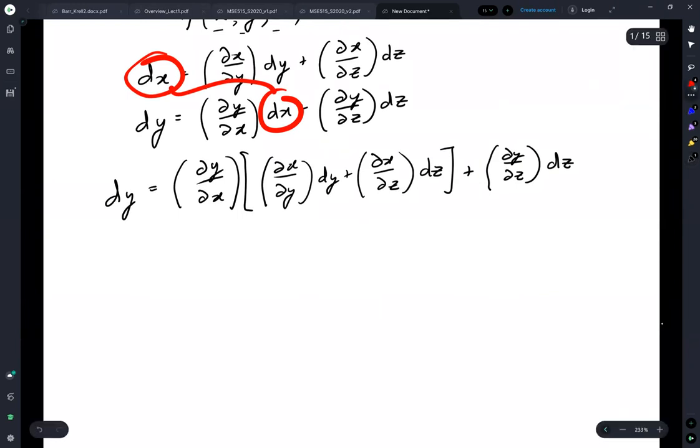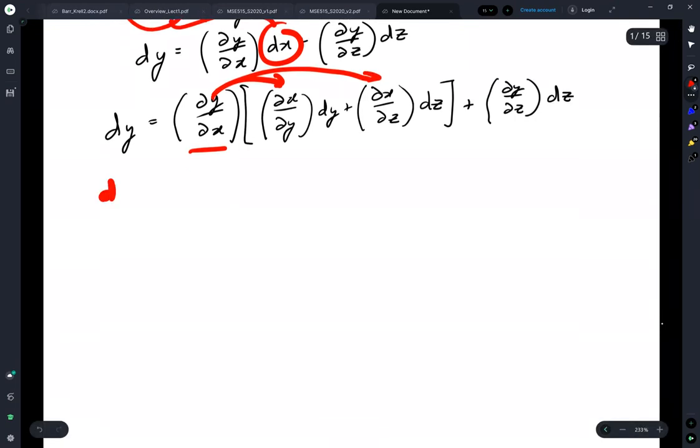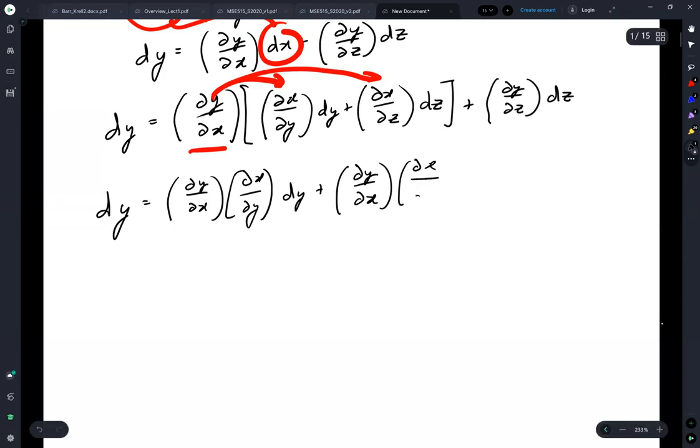Now taking and distributing our dy by dx, we get dy is equal to dy by dx, dx by dy, dx by dz dz plus dy by dz dz.